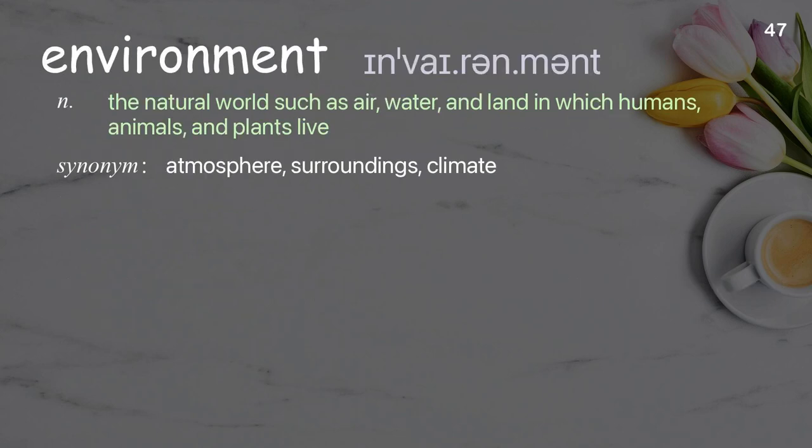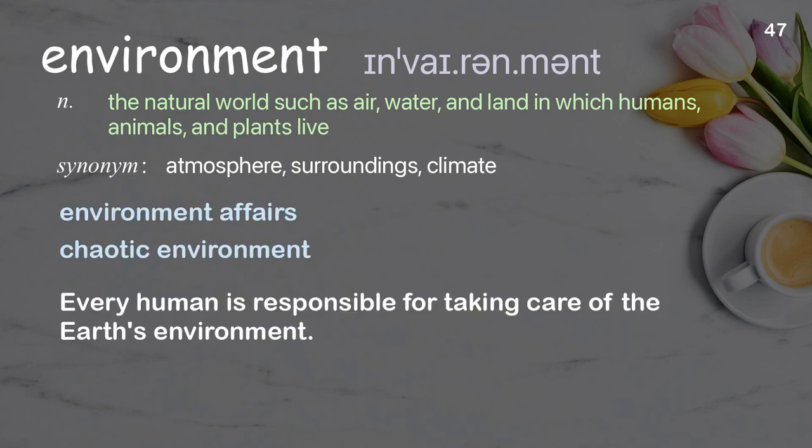Environment. The natural world such as air, water, and land in which humans, animals, and plants live. Examples: environment affairs, chaotic environment. Sentence: Every human is responsible for taking care of the Earth's environment.